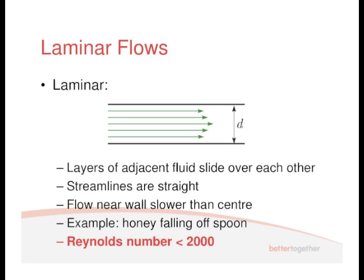Streamlines are particles of fluid. Essentially they're moving in a straight line and you have a nice velocity profile where the flow in the center of the pipe is the fastest and the flow at the edge of the pipe is virtually stationary.